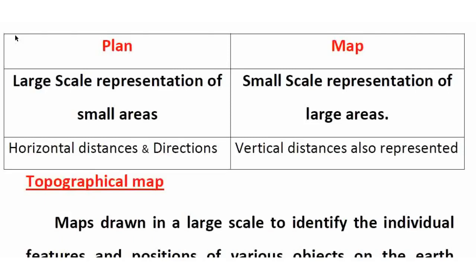For example, map of India — India map is a large area, so the map of India is small scale. Small scale is a representation of large areas — that is a map. Plan and map are different: plan shows horizontal distance and direction only. In case of a map, vertical distance is also denoted — in the form of contours. Contour form denotes vertical distance, height, or elevation.